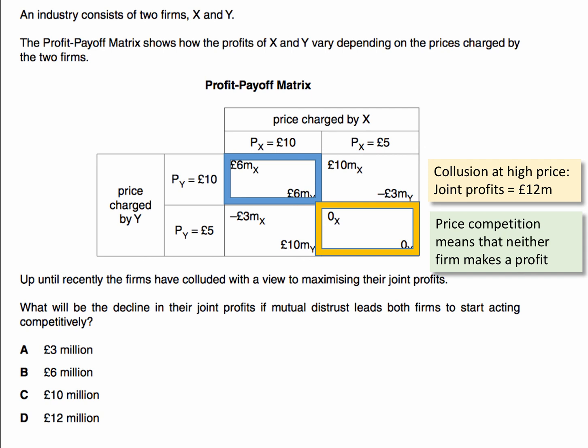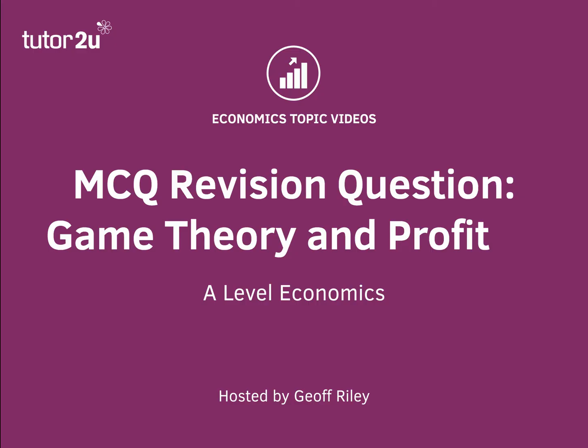The question is: what's the decline in their joint profits? The joint profits initially were £12 million, and now they fall down to zero. So the right answer — I hope you got it — is D. If they both act competitively, they stand to lose £12 million in joint profit. So there's our game theory question.